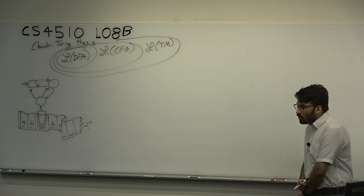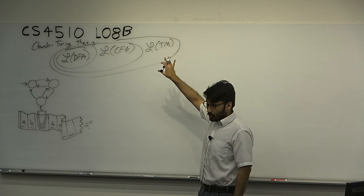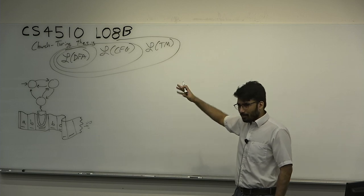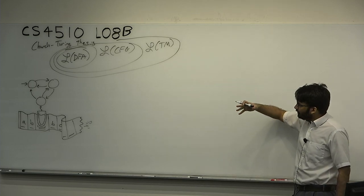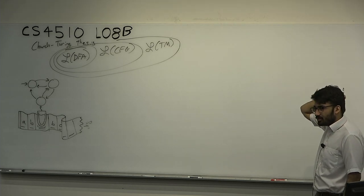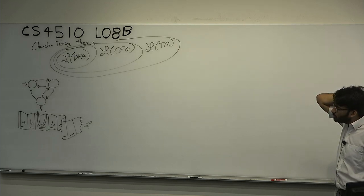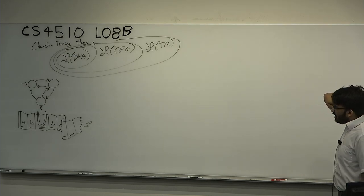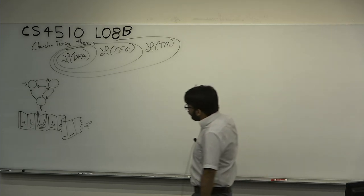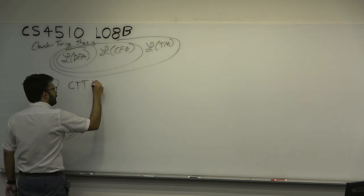We've done three levels. We've shown there are languages decidable by Turing machines — like WW — which are not decidable by CFGs. We talked about how you might simulate a PDA by pretending the stack is simulated on the tape. It appears Turing machines are more powerful than everything. The Church-Turing thesis basically says, in one sentence, there is no level four.